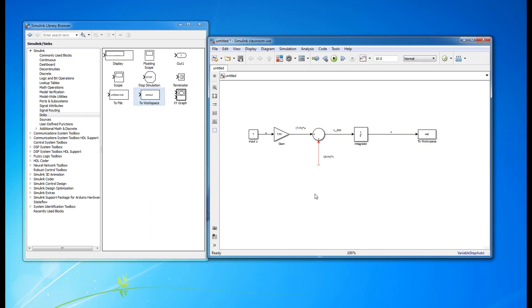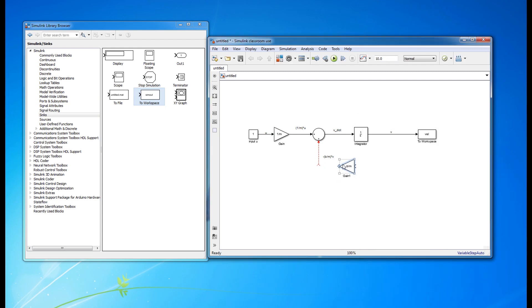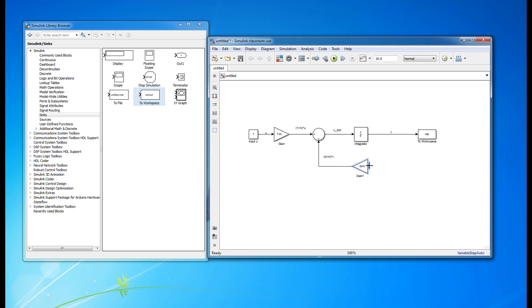One other thing to note is that if you need to pick off a signal, like the velocity signal in this case, you can either start at the termination point and drag the signal back to the desired pickoff location, or you can hold control and click and drag starting at the desired pickoff location.